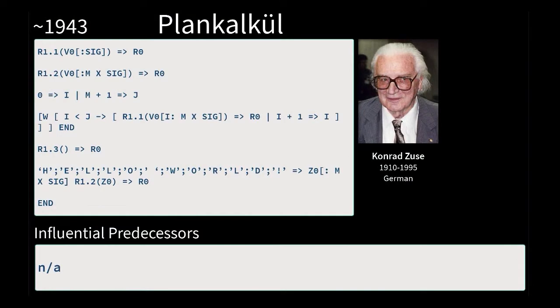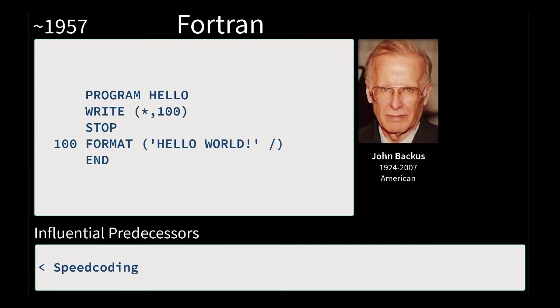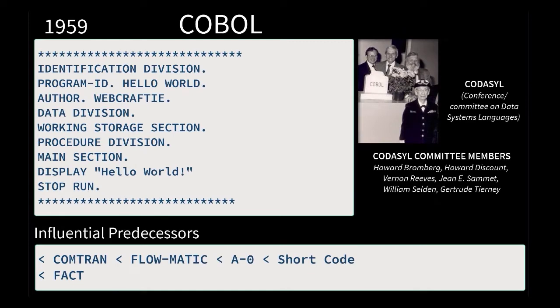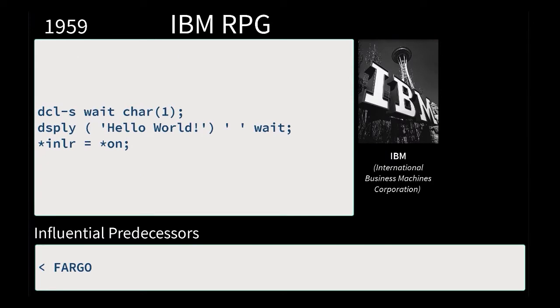We start with Conrad Zuse, and you can see his language looks quite a bit different. Then we move to Fortran, and you can already start seeing similar constructs to what we might use now. COBOL is cool — you can see the committee there with Grace Hopper in the bottom. IBM RPG shows IBM's early involvement in languages.